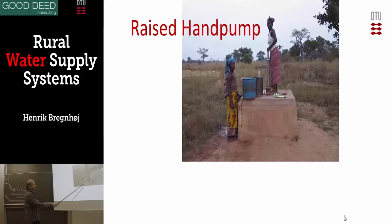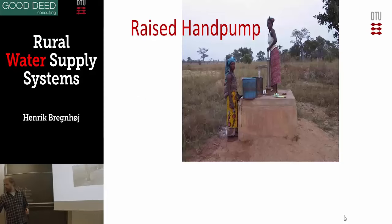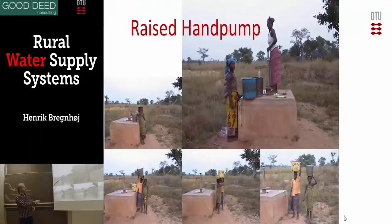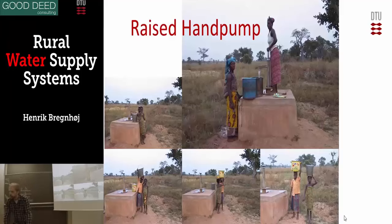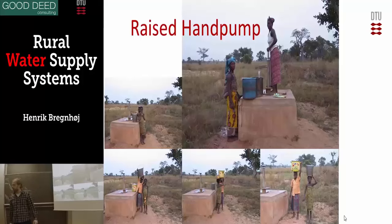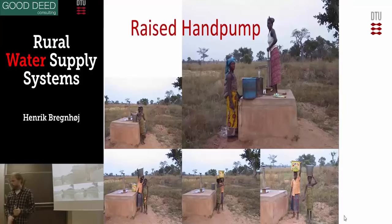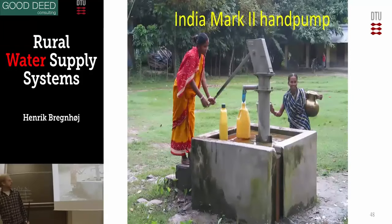Here is an example of a raised hand pump platform. You raise it either because of floods - so it is still available when flooding occurs - or because it is easier to lift water containers from a raised platform. When children or women are carrying water, it is possible for them to lift the 20-liter containers to their heads from a raised platform - it's quite heavy, about 20 liters. The India Mark II pump is very common also in Africa - it is a very strong pump capable of pumping from depths of a hundred meters or more.